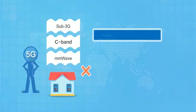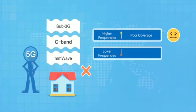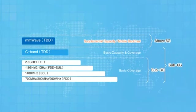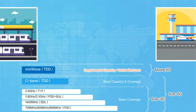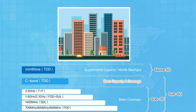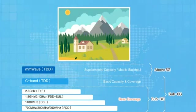The higher the frequency, the shorter the range; the lower the frequency, the better the coverage. Millimetre wave will be used mainly for traffic hotspots like railway stations and airports. C-band deployment will mostly focus on urban areas based on the coverage and capacity it provides compared to millimetre wave and sub-3 GHz spectrum. The sub-3 GHz spectrum is the lowest frequency range of the three, so it provides the best coverage and will be used for the wide-ranging coverage needed in suburban and rural areas.